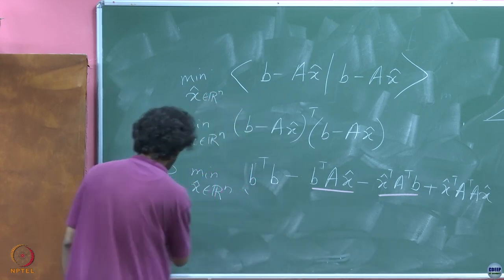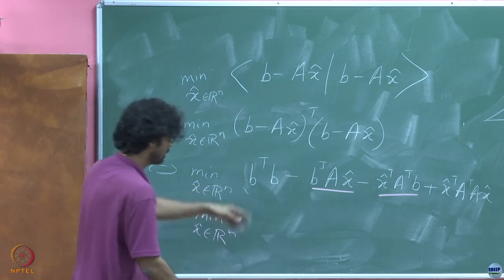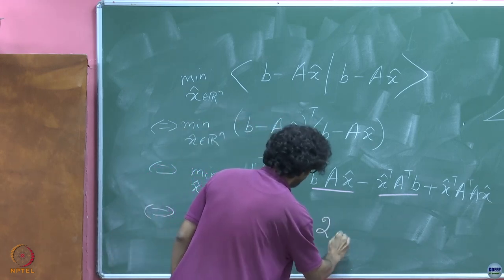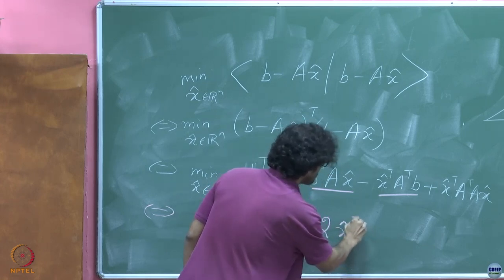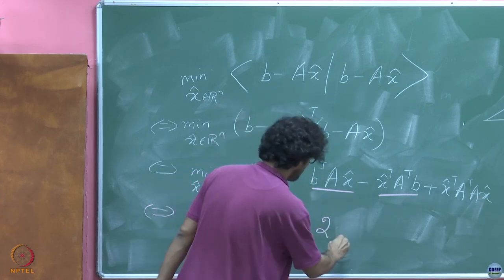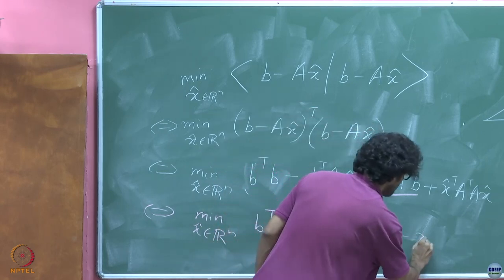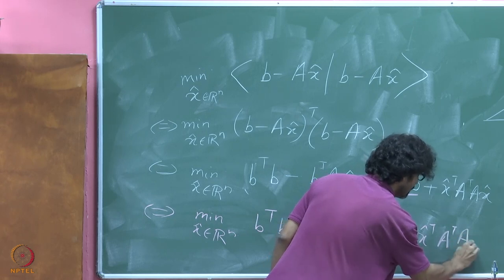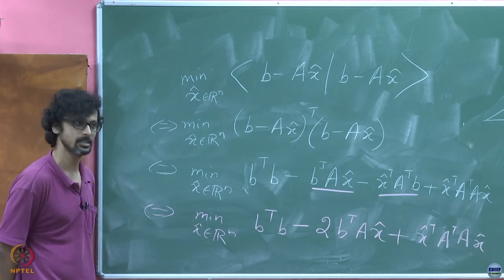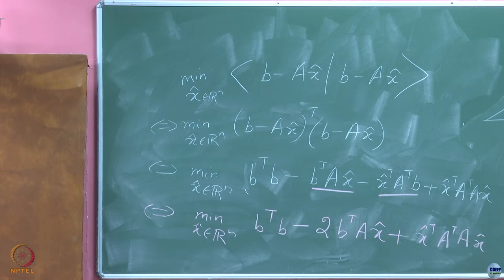So I can just write this instead as minimization over x̂ in R^n. The ultimate statement is: b^T b minus twice x̂^T A^T b plus x̂^T A^T A x̂. Now it is all about our ability to successfully evaluate the gradients of these objects and their Hessians and to convince ourselves that whatever we arrive at will indeed be a minimum.